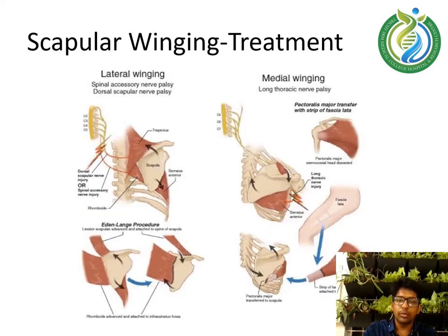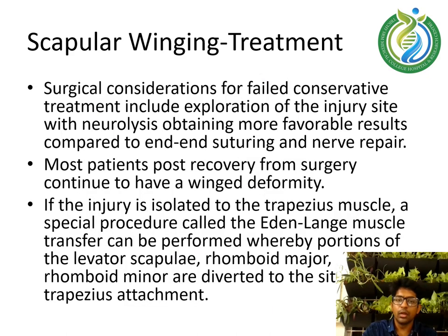The diagram illustrates the management approach for lateral winging versus medial winging. Surgical considerations for failed conservative treatment include exploration of the injury site; neurolysis has obtained more favorable results compared to end-on-end suturing. Most patients post-recovery from surgery continue to have a wing deformity. When the injury is isolated to the trapezius muscle, an Eden-Lange muscle transfer can be performed, whereby portions of the levator scapulae, rhomboid major, and rhomboid minor are diverted to the sites of trapezius attachment.